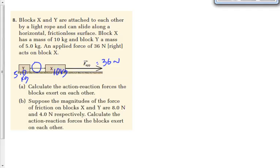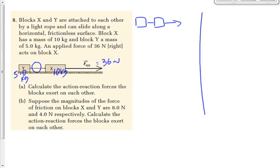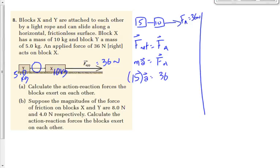We've got to first find the acceleration, right? Remember yesterday we had two columns — we analyzed the entire system. The applied force is 36 newtons. Gravity and normal force cancel out, so we won't draw those. The net force on this system equals the sum of the forces; there's only one — the applied force. F_net equals mass times acceleration; the mass is 15 kilograms total. 36 divided by 15 gives an acceleration of 2.4 meters per second squared.